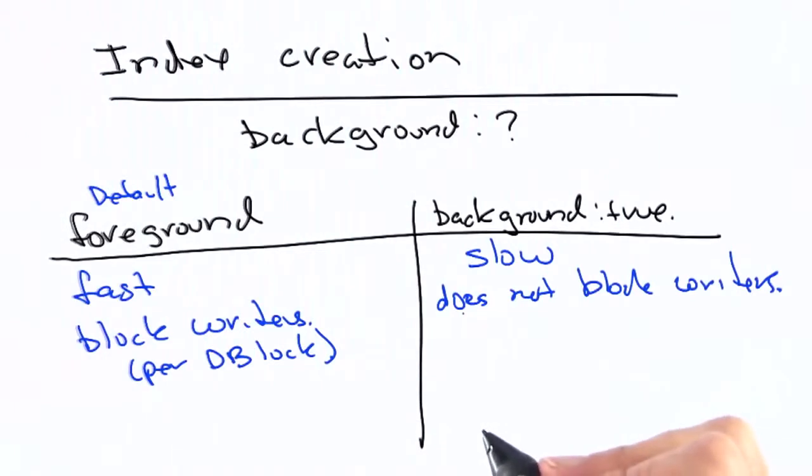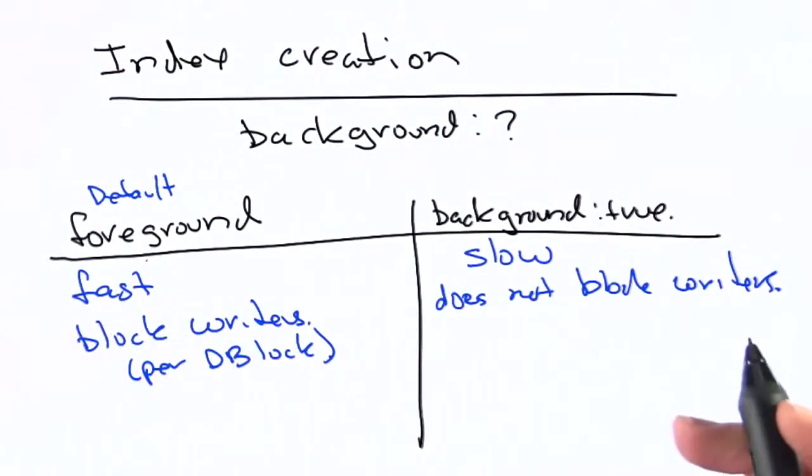Well, it depends on your situation, but if you're all by yourself, and you're just working in development, and it's not a production system, there's a pretty good chance you'd prefer to use a foreground index, because it's going to be fast, and that's the default when you create an index.